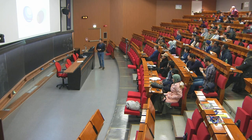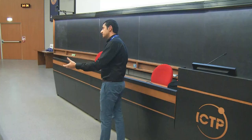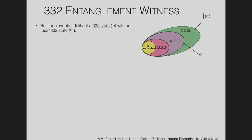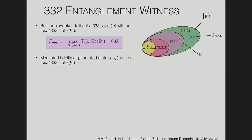This is a fidelity witness that measures fidelity not with MUBs but with two-dimensional subspace measurements. You take an ideal state from the space of three-two-two states, calculate its fidelity with the ideal three-three-two state, and find a maximal value of two-thirds. Then you calculate the fidelity of your experimentally created state with the ideal state. To do this, you need to measure certain density matrix elements — eighteen diagonal elements and three off-diagonal elements.